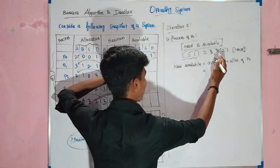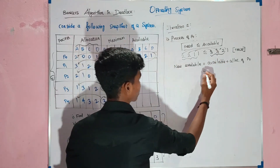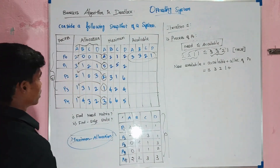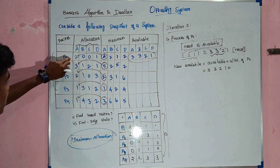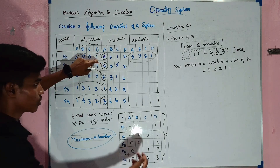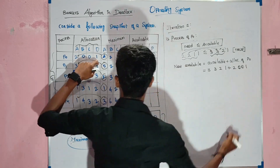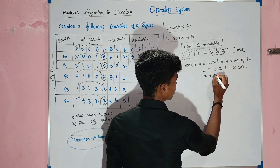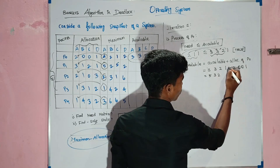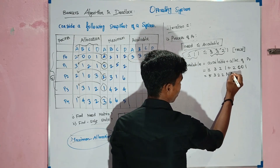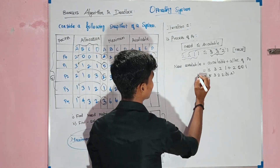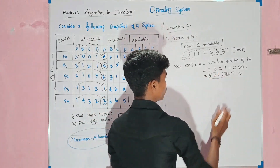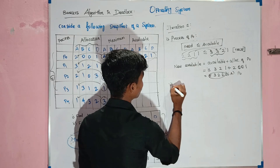Since P0 is satisfied, the new available = previous available + allocation of P0. Allocation of P0 is 2, 0, 0, 1. So: 3+2=5, 2+0=3 (wait, corrected: 3+0=3), 2+0=2, 1+1=2. New available for P0 = 5, 3, 2, 2.